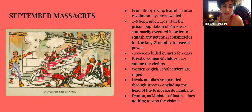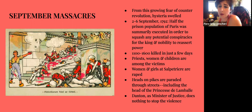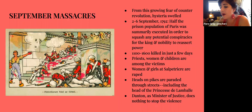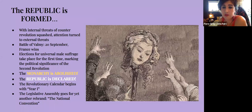The Prussians were winning the war, and fear spread of the fate that would befall revolutionaries if they reached Paris. This led to the September Massacres. Hysteria swelled, and in just a few days at the beginning of September, half of the prison population of Paris was summarily executed to squash any potential conspiracies for the king and nobility to reassert power — estimates of around 1,000 to 1,600 killed in just a few days. Priests, women, and children were targeted, women and girls were raped, and heads were paraded on pikes, including that of the Princesse de Lamballe, a dear confidante of Marie Antoinette. Danton, the Minister of Justice, did nothing to stop the violence.